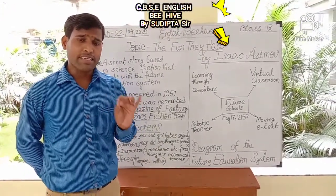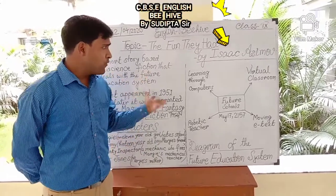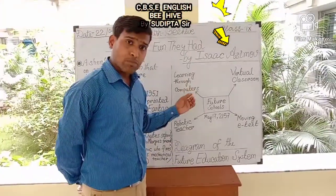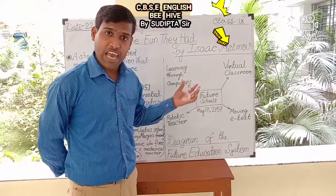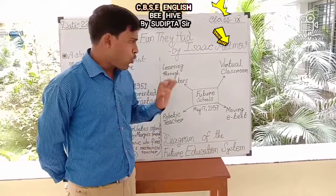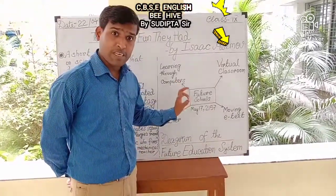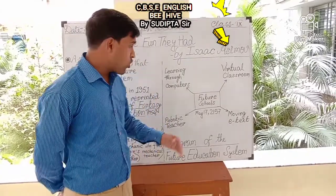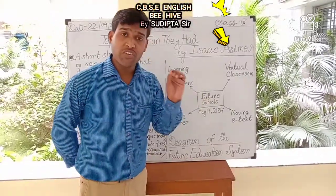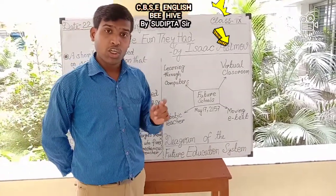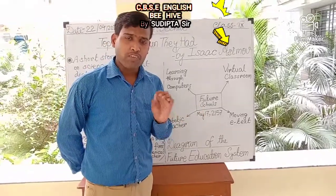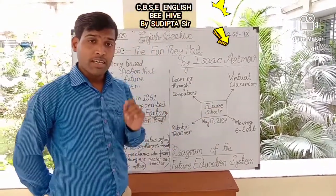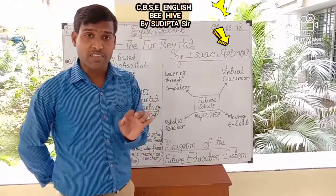Before beginning this chapter, we should look at this diagram, which shows the future education system as described by Isaac Asimov. We need to take note of the date May 17th, 2157, when this whole incident took place. This date is very important — it is more or less 137 years advanced from today.